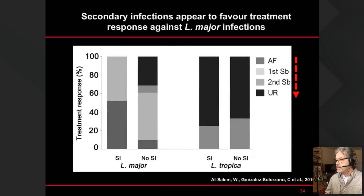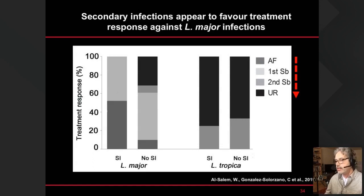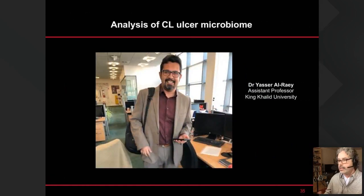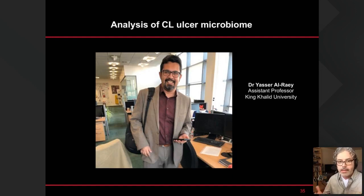A simple graph shows that comparing L. major and L. tropica infections — when there is versus no secondary infection in L. major, there are huge differences in treatment response, whereas in L. tropica it doesn't seem to make a difference. To investigate this further, Yasser Al-Rawi, a PhD student in my lab until last year when he was at King's College University, looked into more details of the microbiome of these two groups of patients.